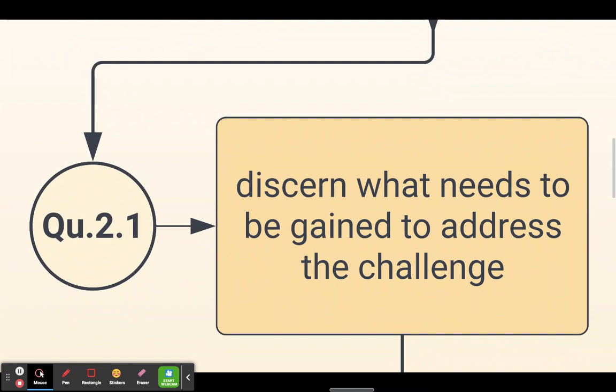The first competency in Question Generation, 2.1, is students can discern what needs to be gained to address the challenge. To me, this is like a need to know - we've sorted out what we know, we're figuring out what we need to know.